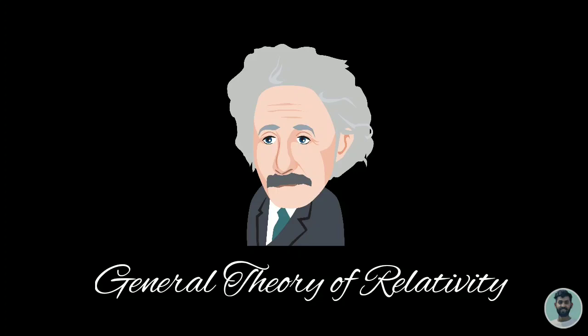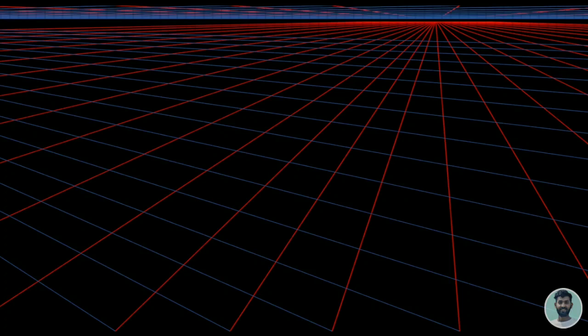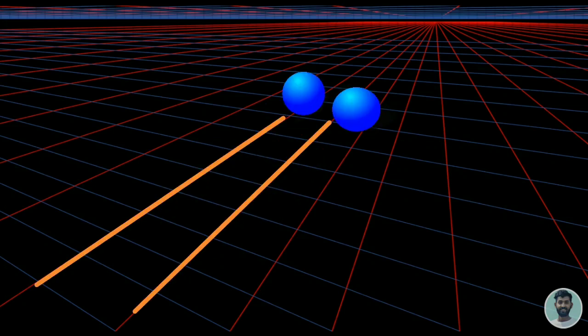So now let's understand something more. Consider a flat space time. If two objects start moving along two parallel paths then they will move forever parallel to each other. Because as I said earlier that objects move in straight line in space time unless some force act on them.